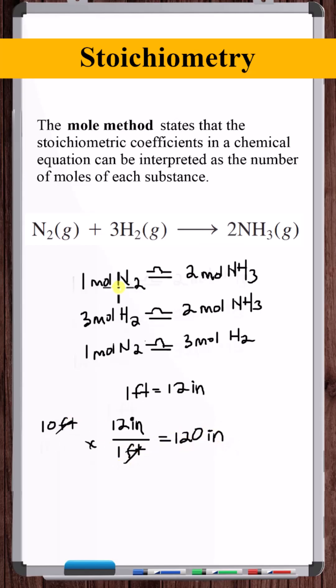For every one mole of N2 consumed, two moles of NH3 are produced. For every three moles of H2 consumed, two moles of NH3 are produced. And for every one mole of N2 consumed, three moles of H2 are consumed.